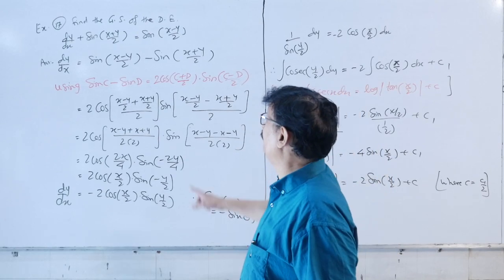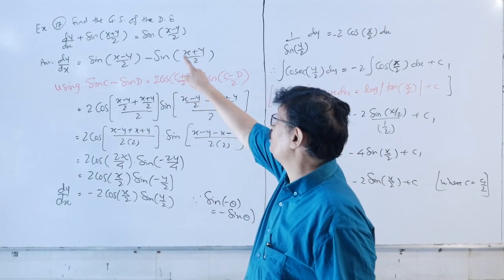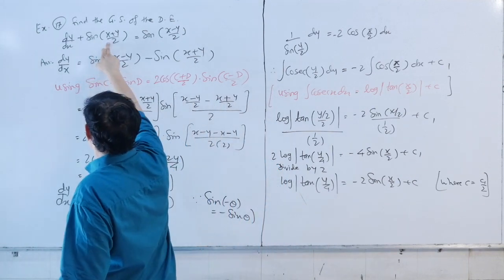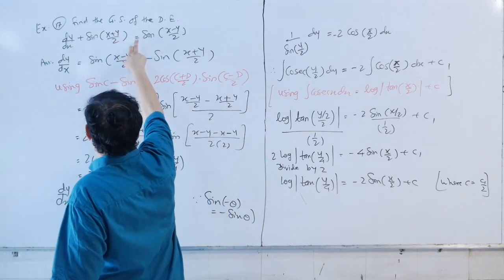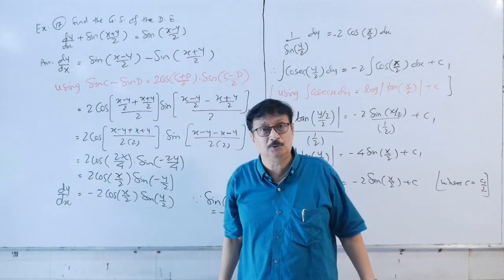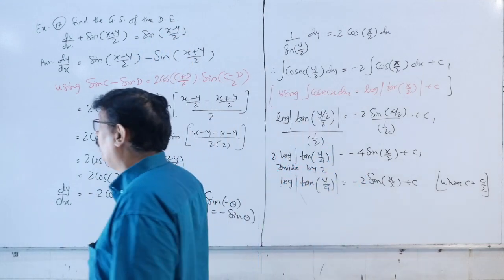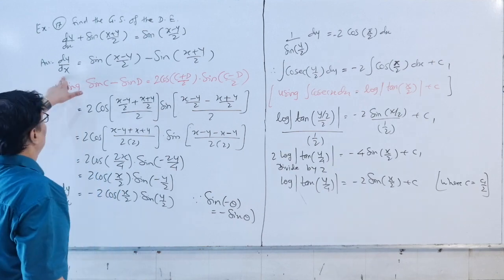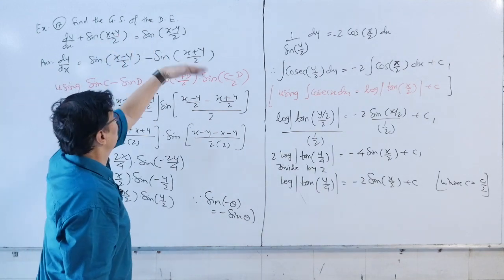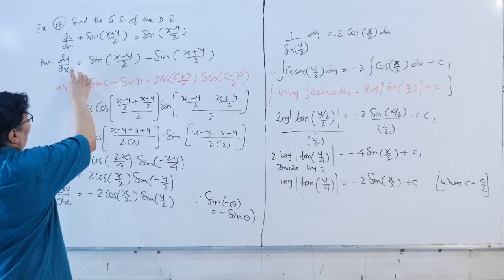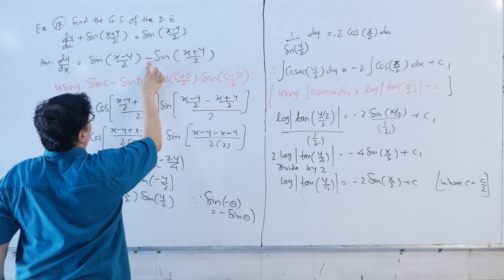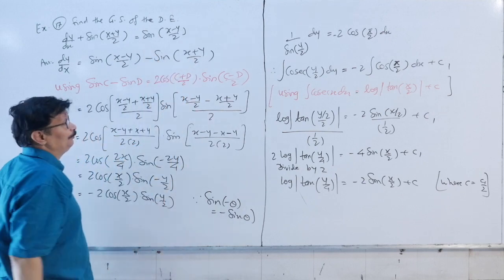Example 17: find the general solution of the differential equation dy/dx + sin(x + y/2) = sin(x - y/2). So we rearrange: dy/dx is equal to sin(x - y/2) minus sin(x + y/2).